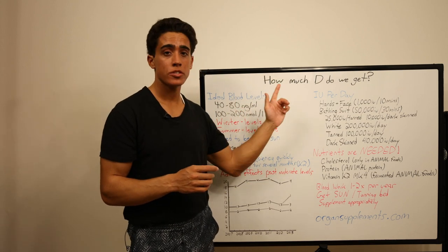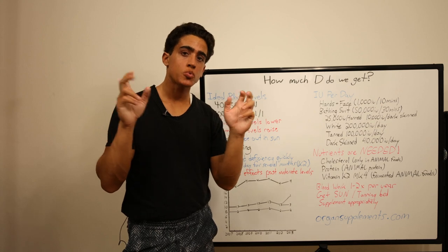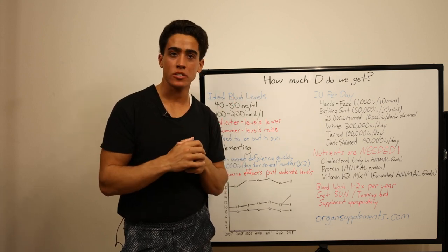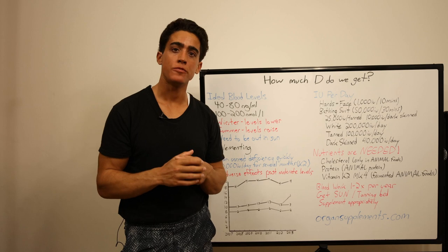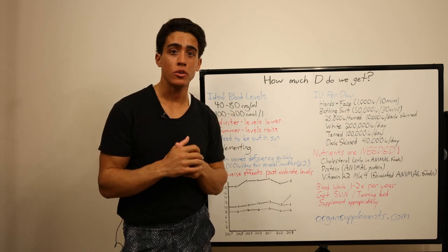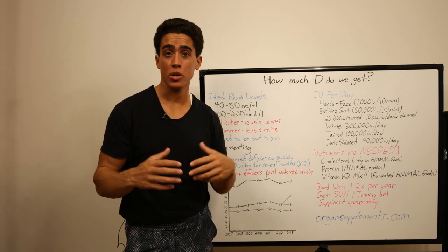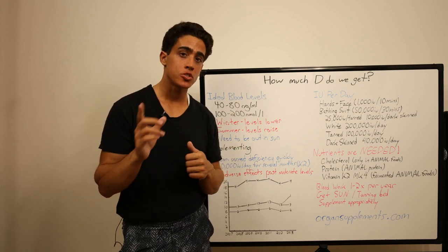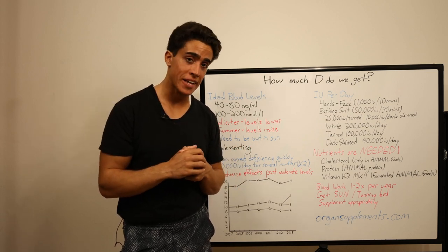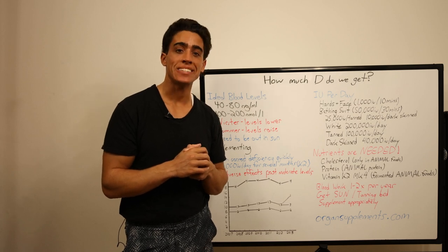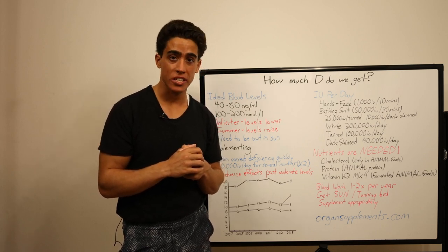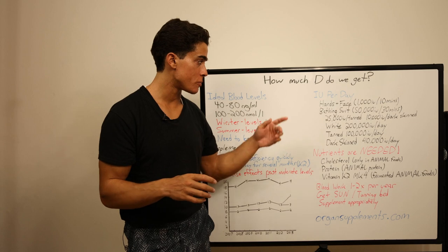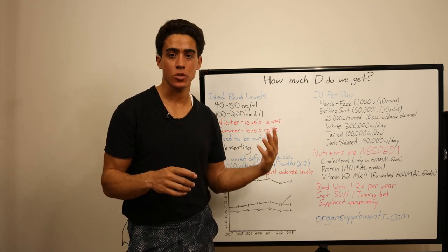And there's another study claiming, for most white people, a half hour in the summer sun in a bathing suit can initiate the release of 50,000 IU of vitamin D into circulation within 24 hours of exposure. This same amount of exposure yields 20,000 to 30,000 IU in tanned individuals and 8,000 to 10,000 IU in dark skinned individuals.